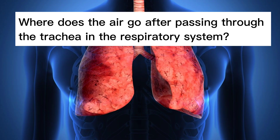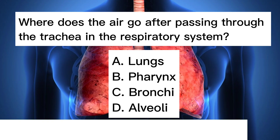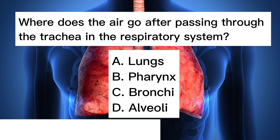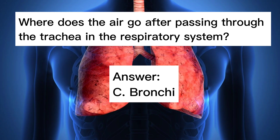Where does the air go after passing through the trachea in the respiratory system? A. Lungs. B. Pharynx. C. Bronchi. D. Alveoli. Answer: C. Bronchi.